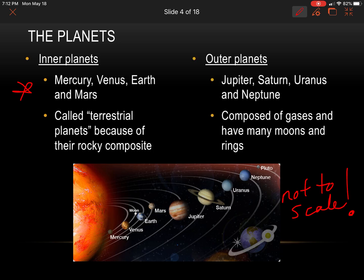The outer planets, on the other hand — Jupiter, Saturn, Uranus, and Neptune — are mainly composed of gases, and they're known for having many moons and rings. You need to fill in 'gases' and 'moons' in your notes for that one.